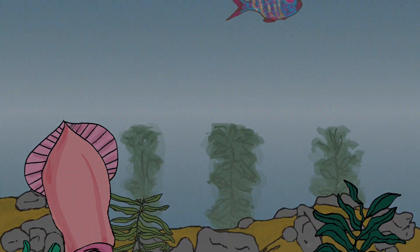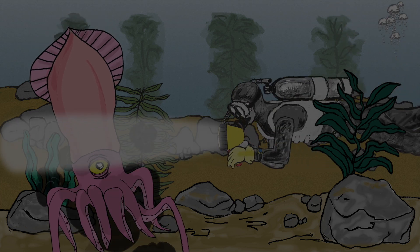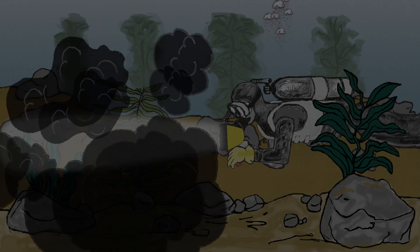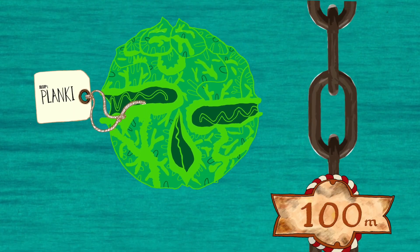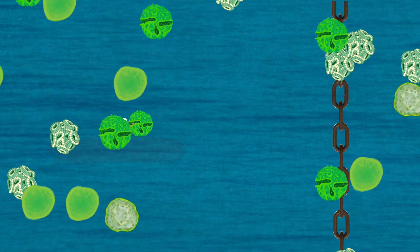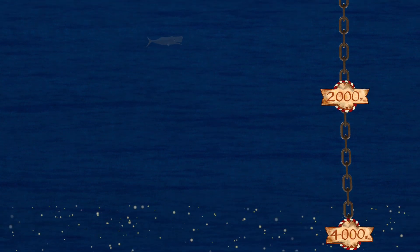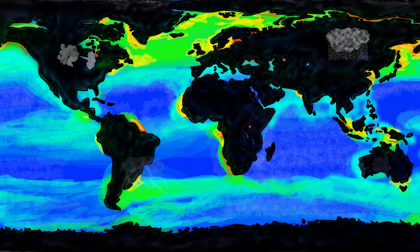Phytoplankton can only grow near the ocean's surface, where there is lots of sunlight. Moving away from the surface, the ocean becomes dark very quickly. When phytoplankton die, they may sink hundreds or even thousands of metres into the dark ocean. The phytoplankton nutrients are recycled at great depths, and are returned to the surface by the effects of the wind and ocean currents — but this can take up to a thousand years.